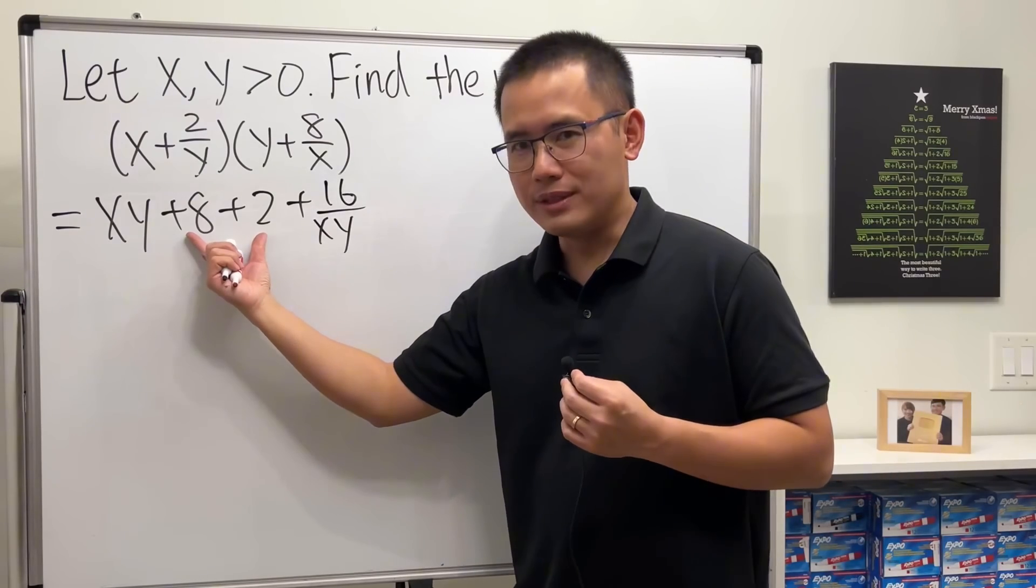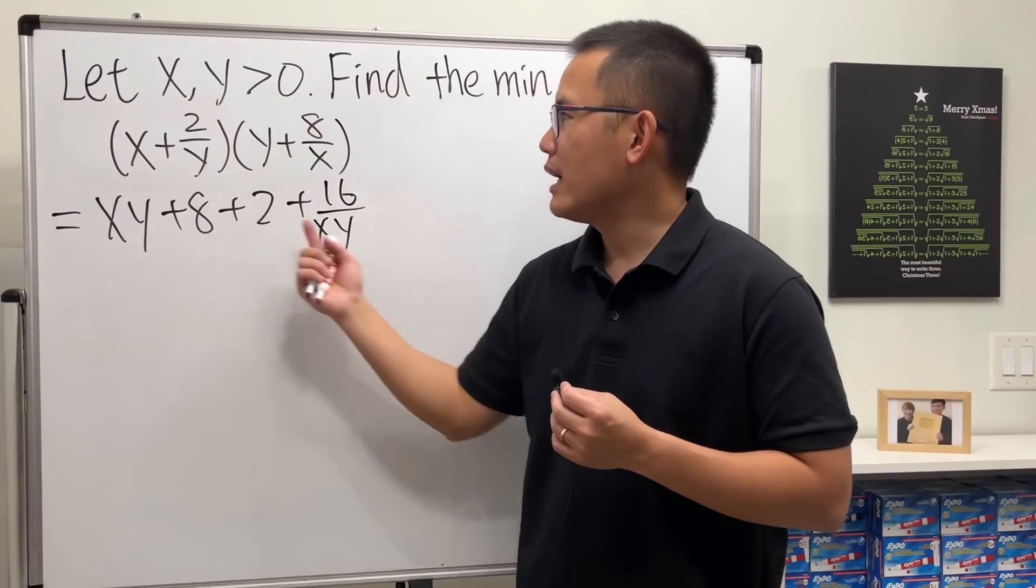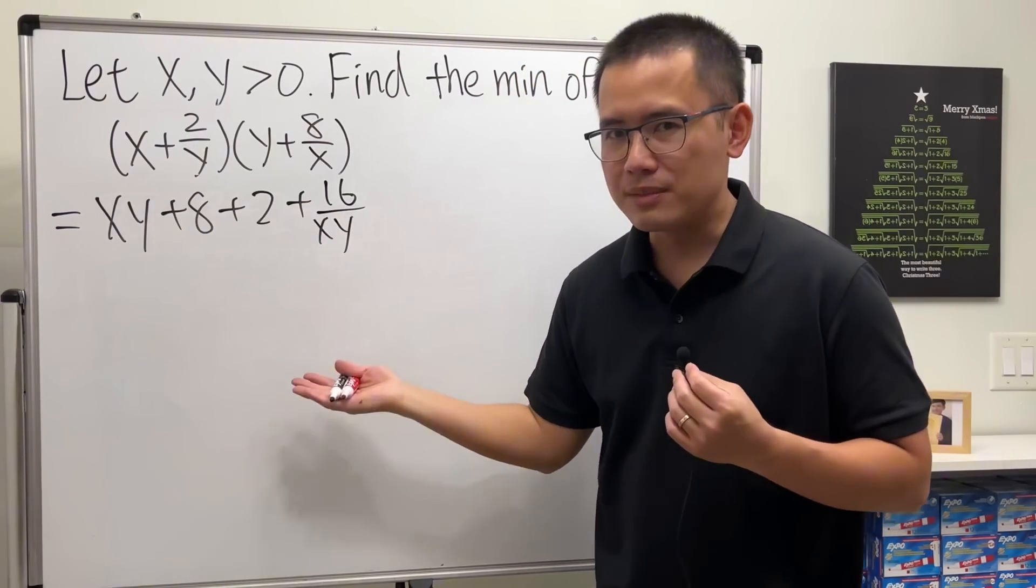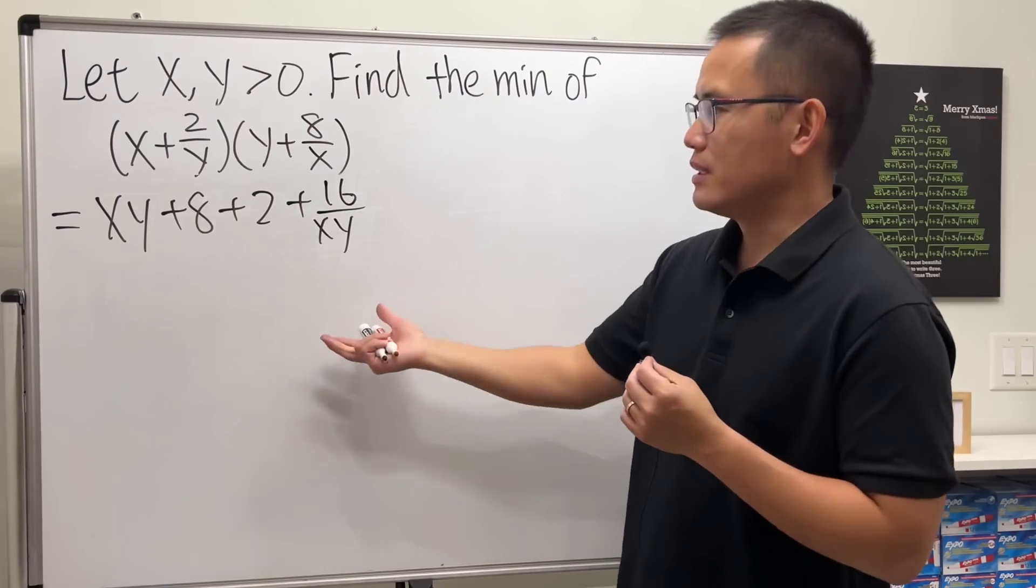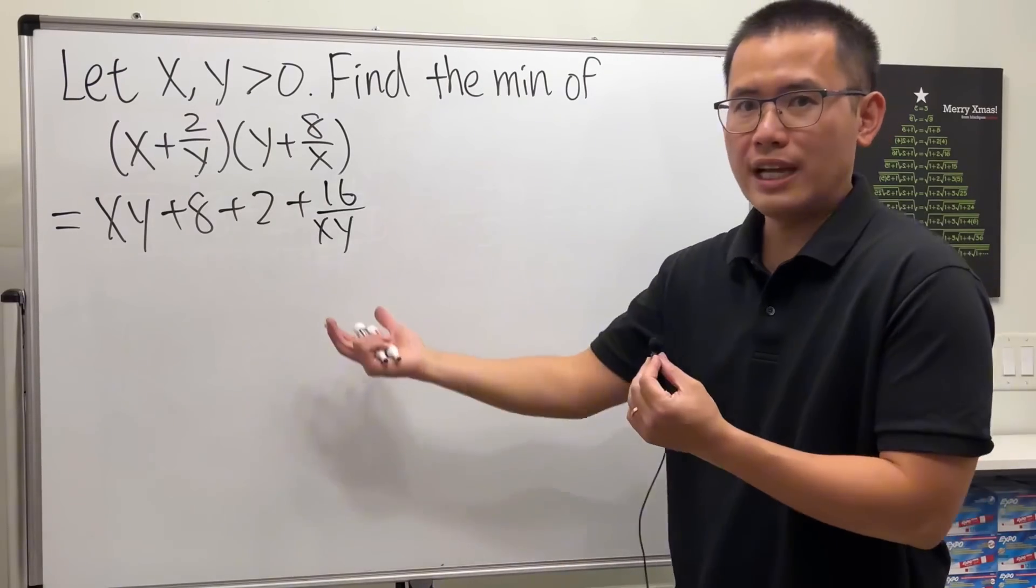Now 8 plus 2 is 10, and then we know x, y are both positive, so we can expect the answer to be bigger than 10, or maybe just 10. I don't know yet.